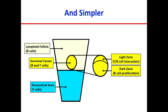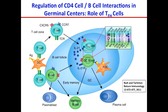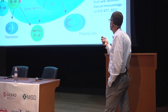B cells that haven't rearranged their B cell receptors appropriately die off — they don't proliferate and don't survive. The T follicular helper cells interact with B cells in the light zone. T cells come from the T cell zone and move into the germinal centers by upregulating CXCR5 and downregulating CCR7, which allows them to migrate into the germinal centers. In that process, they upregulate BCL6, which is the master regulator of T follicular helper cells.